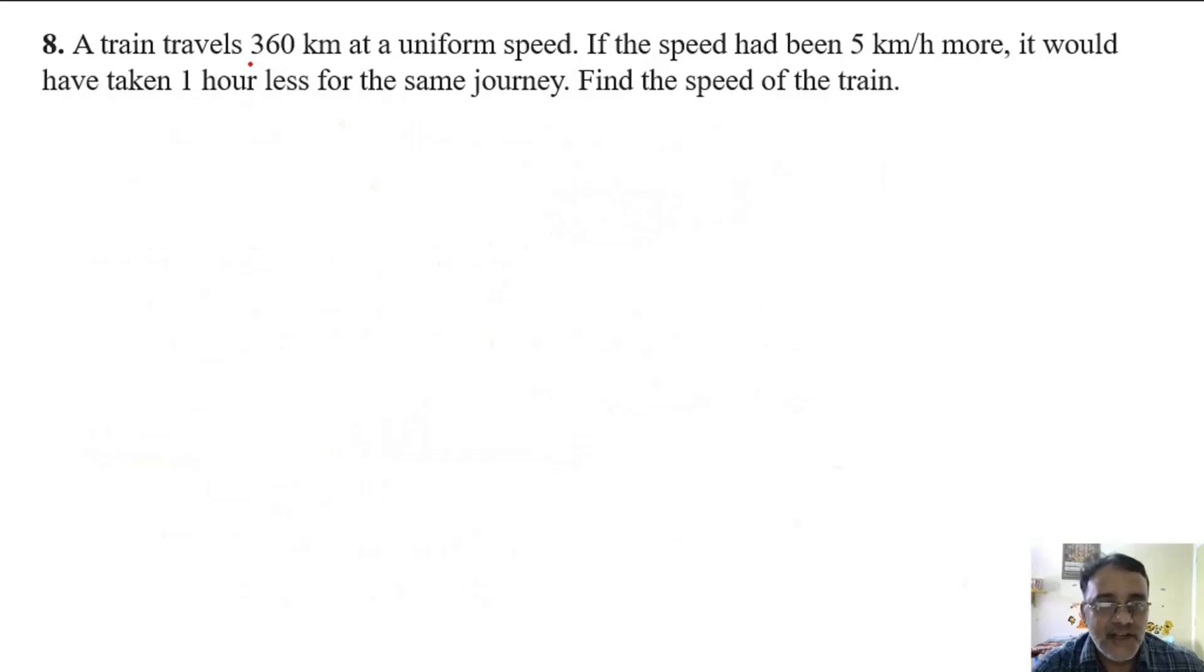A train travels 360 km at a uniform speed. This question is important like the motorboat question. If the speed had been 5 km per hour more, it would have taken 1 hour less for same journey. If you increase the speed, definitely you will reach early.